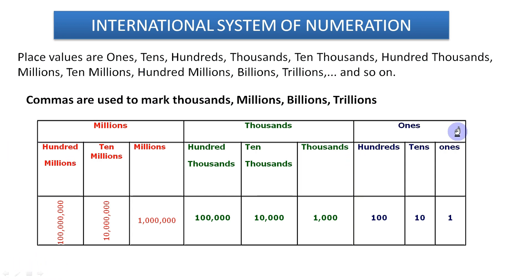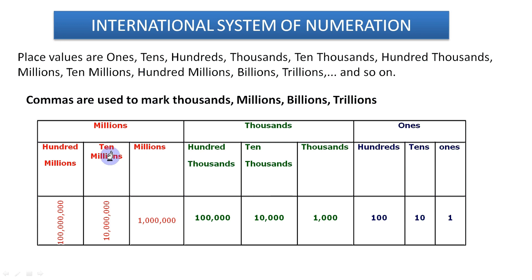Here is the place value table. If we understand this table properly, learning to read large numbers will be very easy. If you see here, we have ones, thousands, millions — these are all called periods. After that, we have ones, tens, hundreds, thousands, ten thousands, hundred thousands, millions, ten millions, hundred millions — these are all called places. With the help of these places we can read and write large numbers very easily.